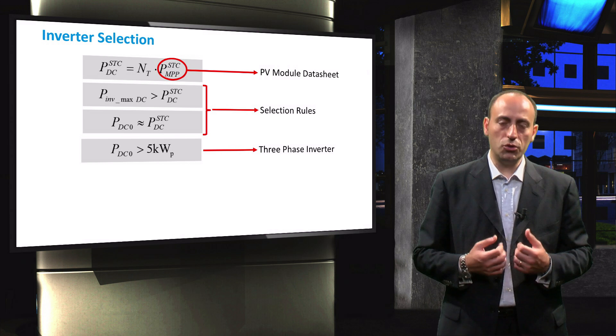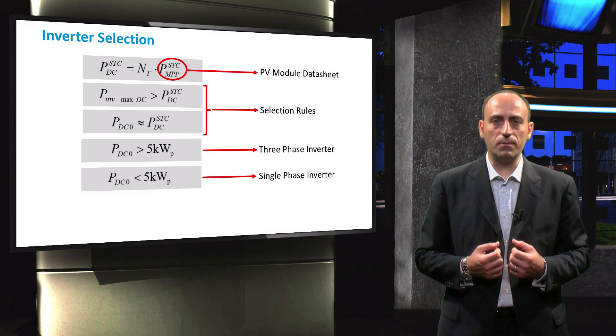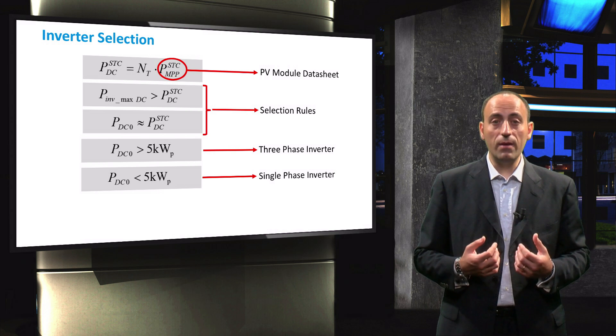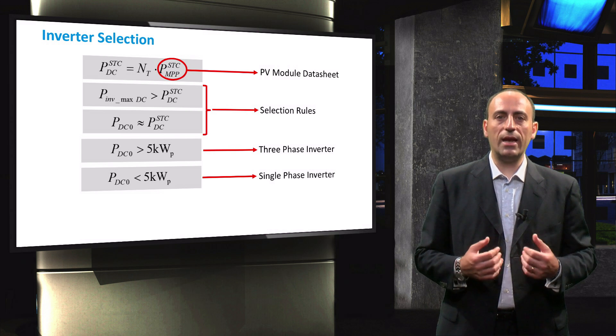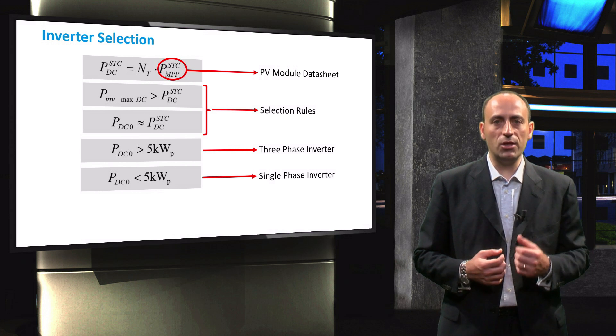An additional consideration is whether to use a three-phase or a single-phase inverter. If the inverter nominal DC power is greater than 5 kW peak, then a three-phase inverter should be used. Otherwise, a single-phase inverter is just sufficient.